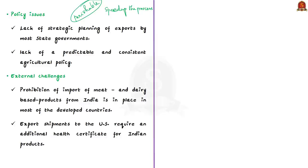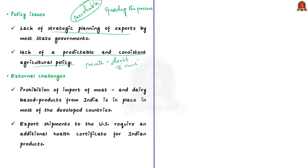The second structural difficulty is policy issues. There is a lack of strategic planning of exports by most state governments, largely because they remain unaware of the international market situation. There is also a lack of predictable and consistent agricultural policy — when government keeps changing the policy, private players become skeptical about investing. This is happening in India and needs to be addressed.